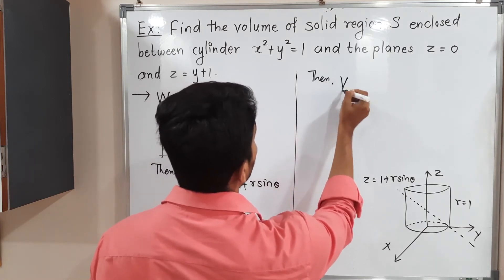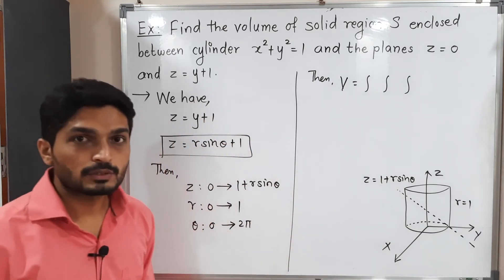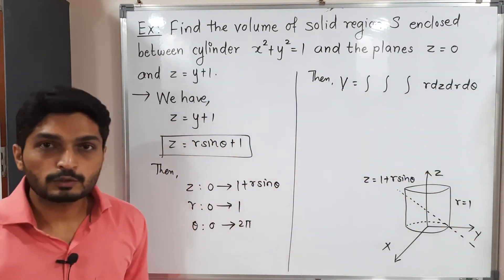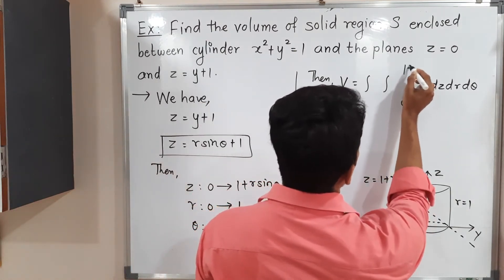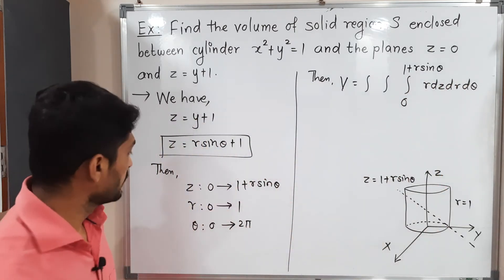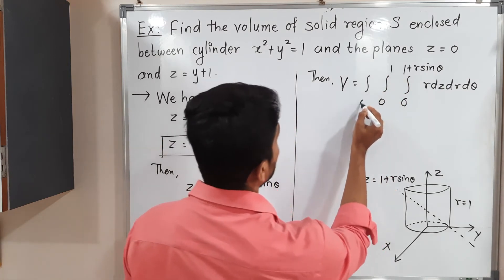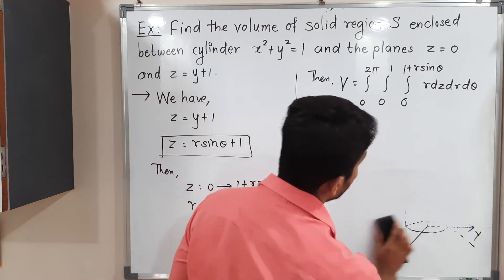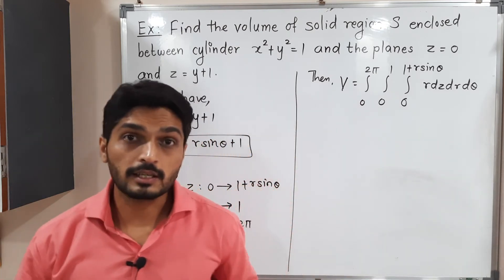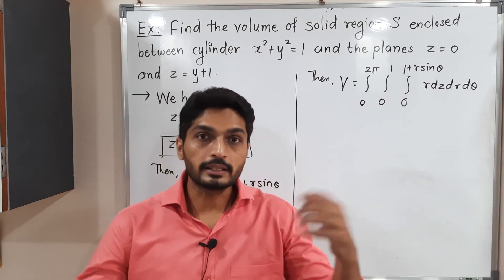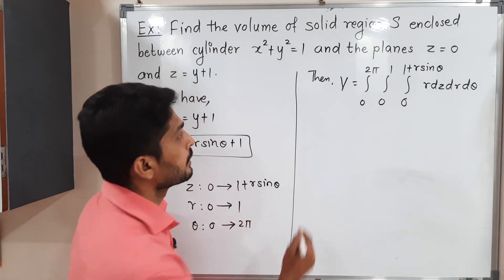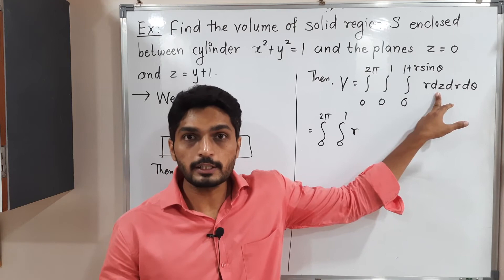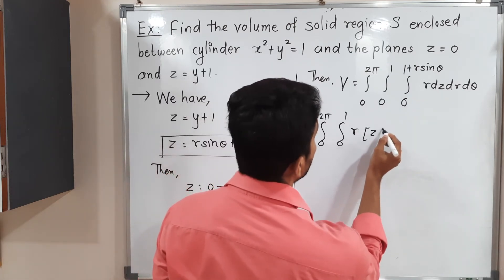The volume is given by the triple integral of dV, where dV = r dz dr dθ. Writing out the integral: limits of z from 0 to 1 + r sinθ, limits of r from 0 to 1, and limits of θ from 0 to 2π. Since limits are not all constant, we integrate step by step.